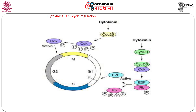An important role of cytokinins is in the regulation of the cell cycle. The cell cycle consists of four phases, with two gap phases separating the S phase, during which DNA synthesis occurs, and the M phase, where mitosis occurs. Cytokinin levels are seen to increase transiently during the beginning of S and the M phase, suggesting their role in regulating progression of the cell cycle.